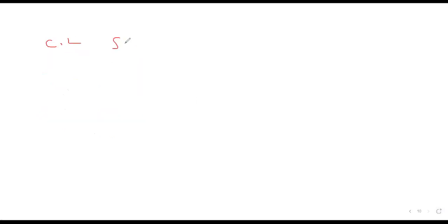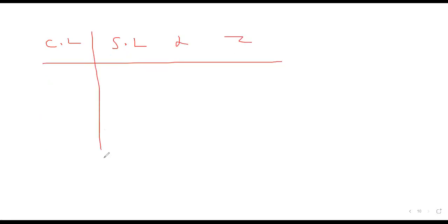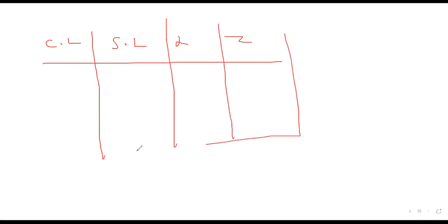To summarize the relationships: confidence level, significance level, alpha, and Z. Understanding this table is essential for working through all sampling and confidence interval problems.